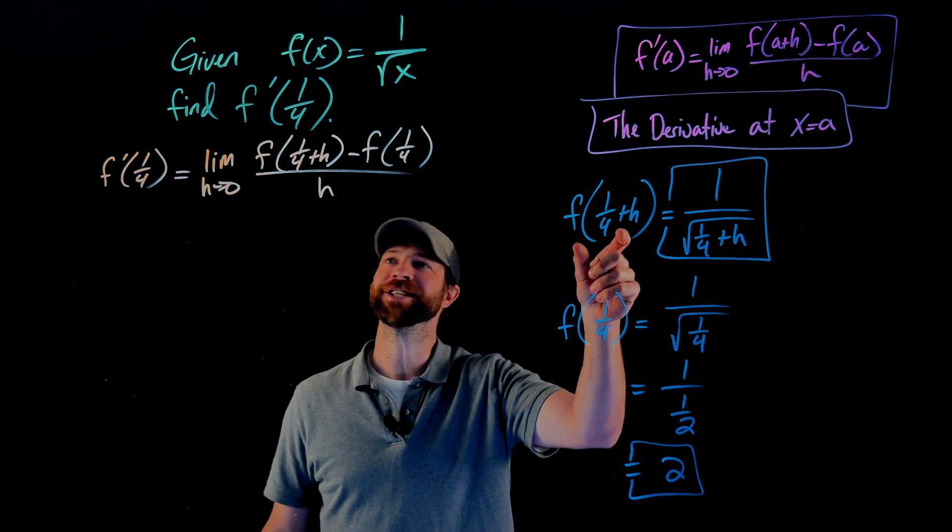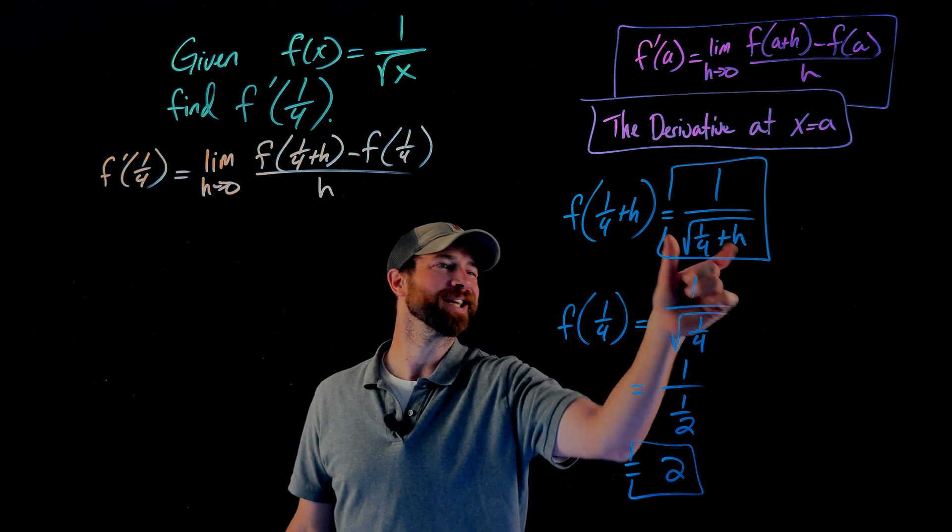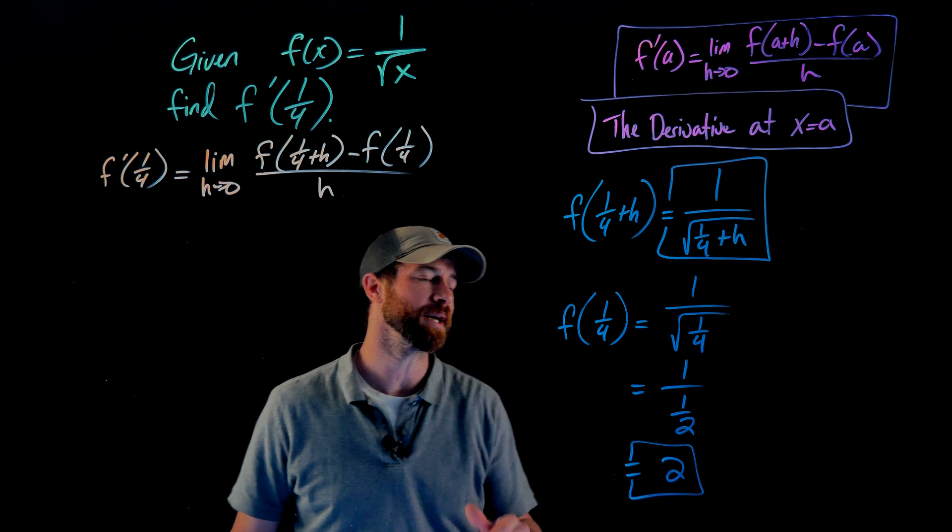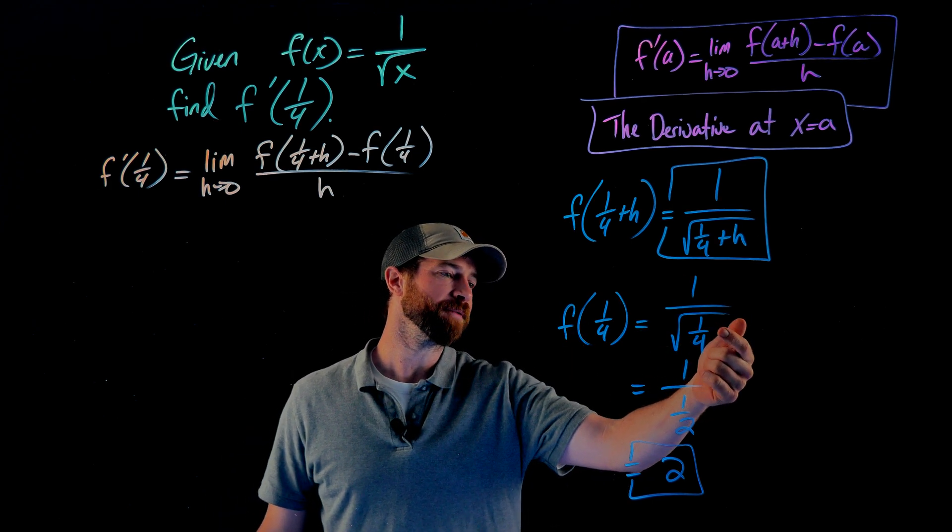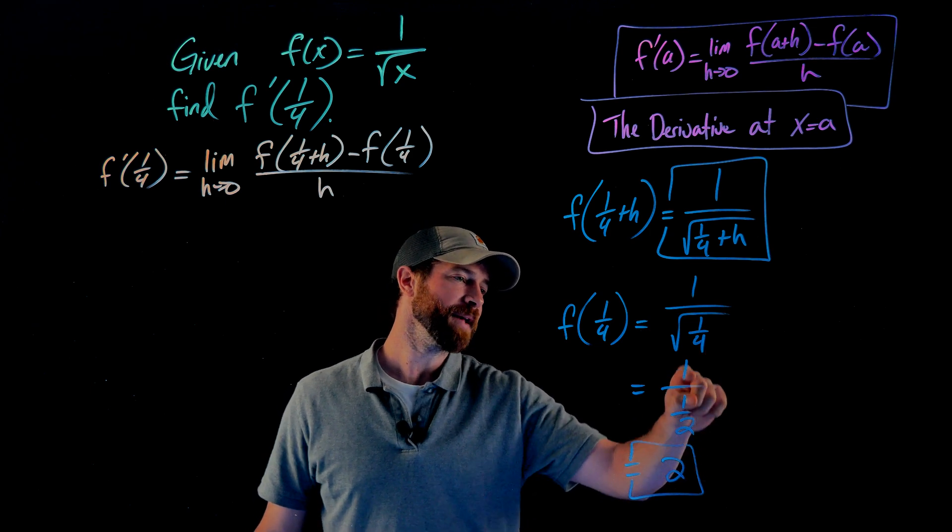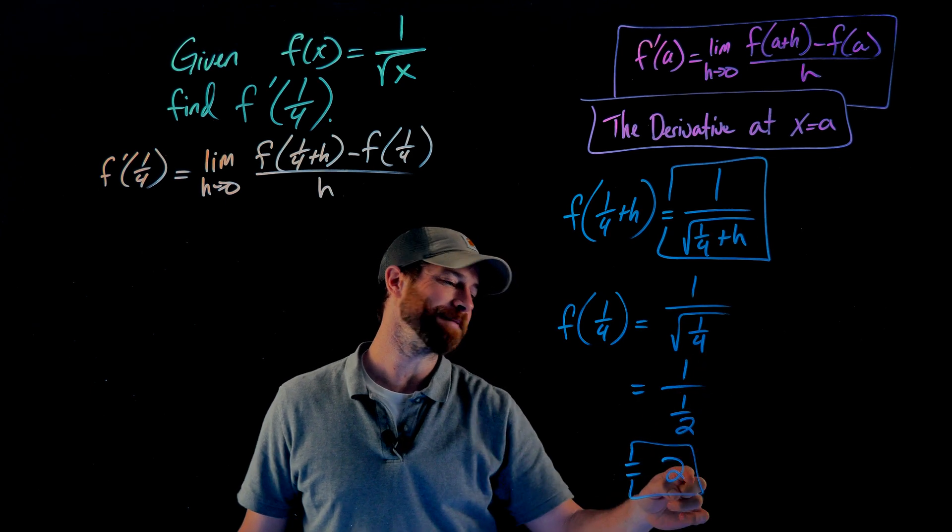When I plug 1/4 plus h into my function, I get this right here, nothing really going on interesting there. When I plug 1/4 in, importantly here, the square root of 1/4 is 1/2, and then 1 divided by 1/2 is 2.